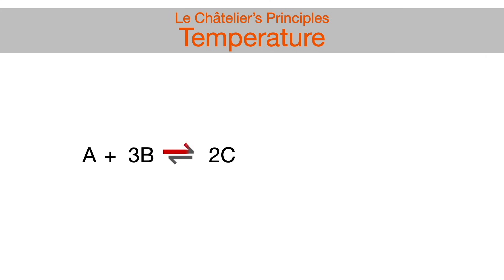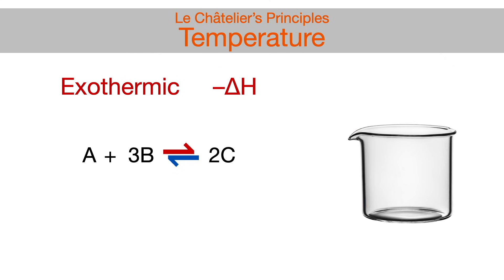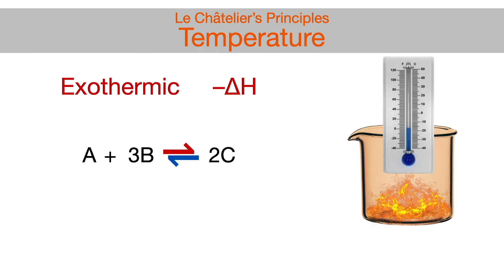If an equilibrium reaction is labeled as exothermic or has a negative delta H, or is described as releasing, producing, or yielding heat or energy, or is increasing the temperature of the surroundings, that means the forward reaction is exothermic and heat or energy is a product.